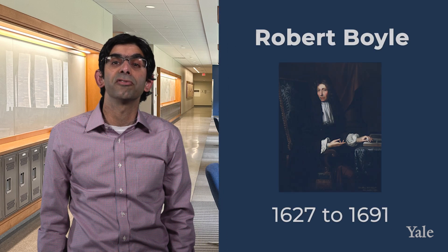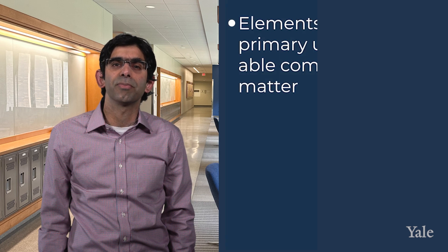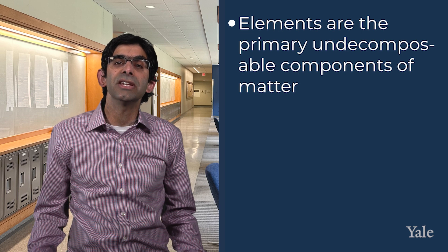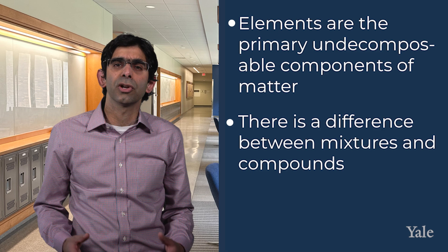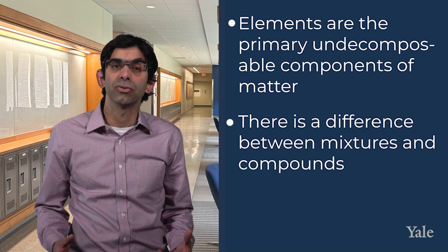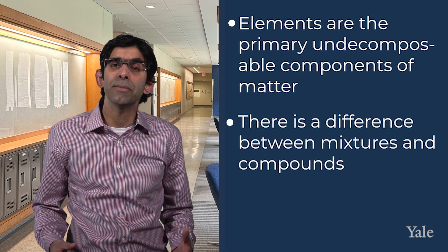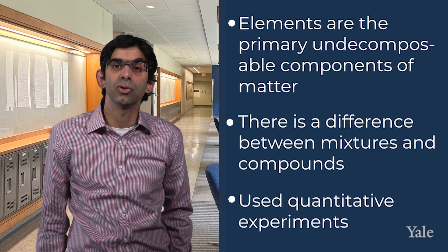An important figure in the transition from alchemy to modern chemistry was Robert Boyle, who lived from 1627 to 1691. He was a proponent of the theory that elements are the primary, undecomposable components of matter, and that there is a difference between mixtures and compounds. While Boyle was also an alchemist who hoped to transmute metals, he was able to create important theories because he started to move chemistry to a quantitative science where known amounts of materials are used.